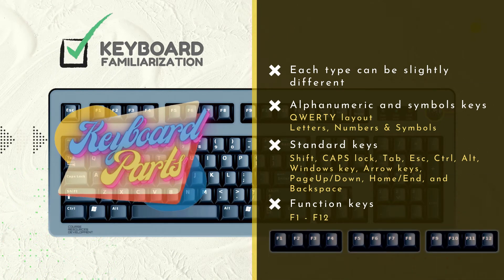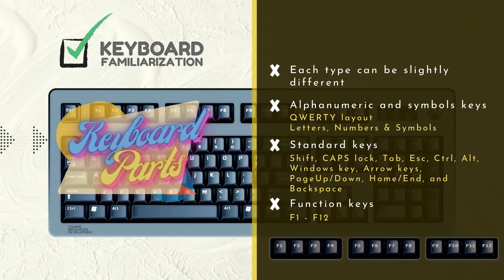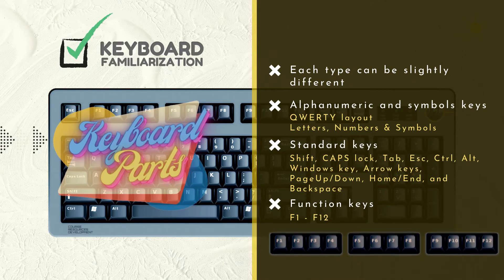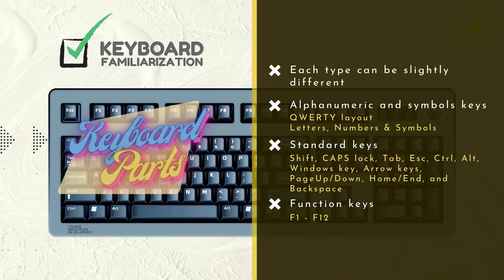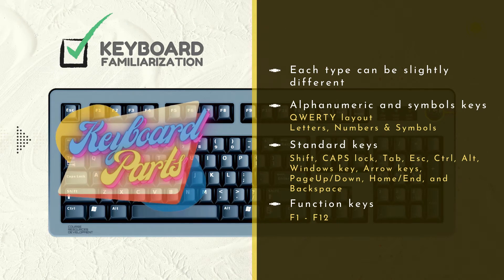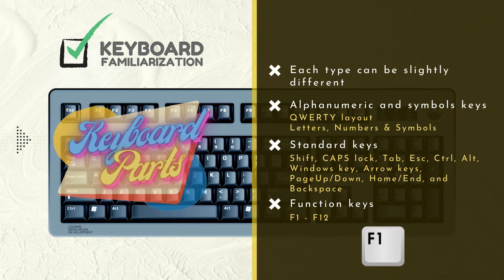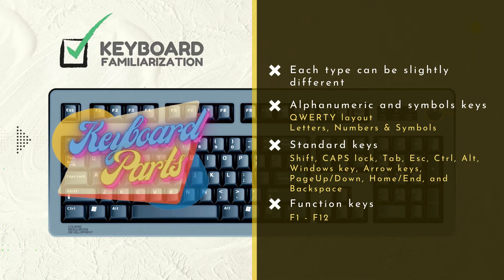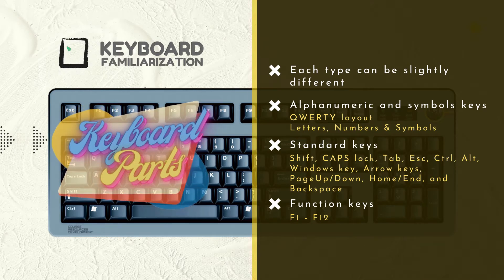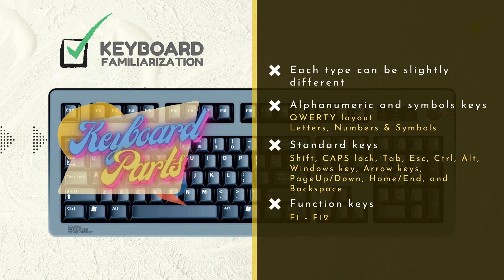These are the function keys — F1 through F12. These function keys have specific uses, and the function depends on what application you happen to be working in. F1 almost always brings up a help window. All the rest of them, F2 through F12, will do very different things depending on which operating system or which application you happen to be working in.